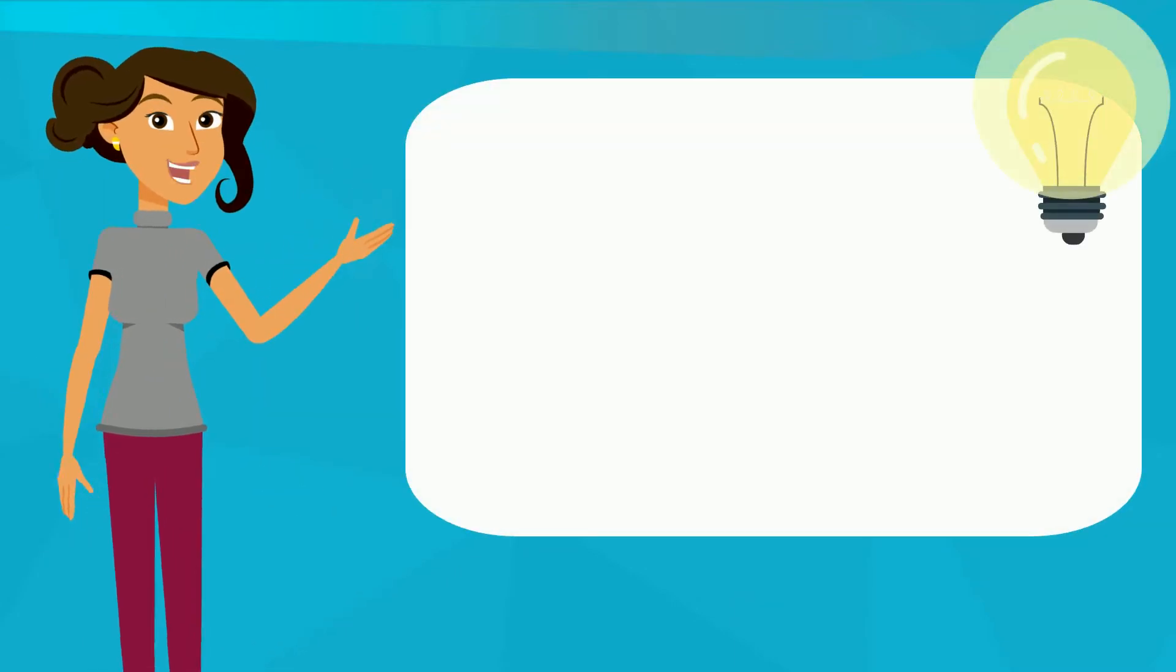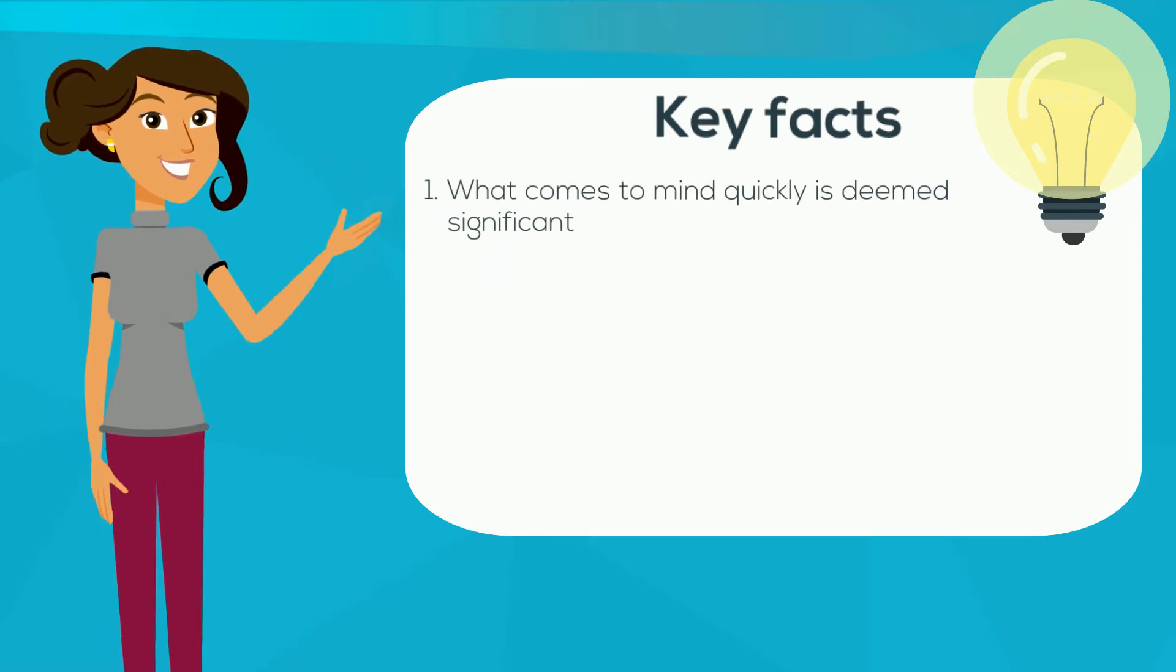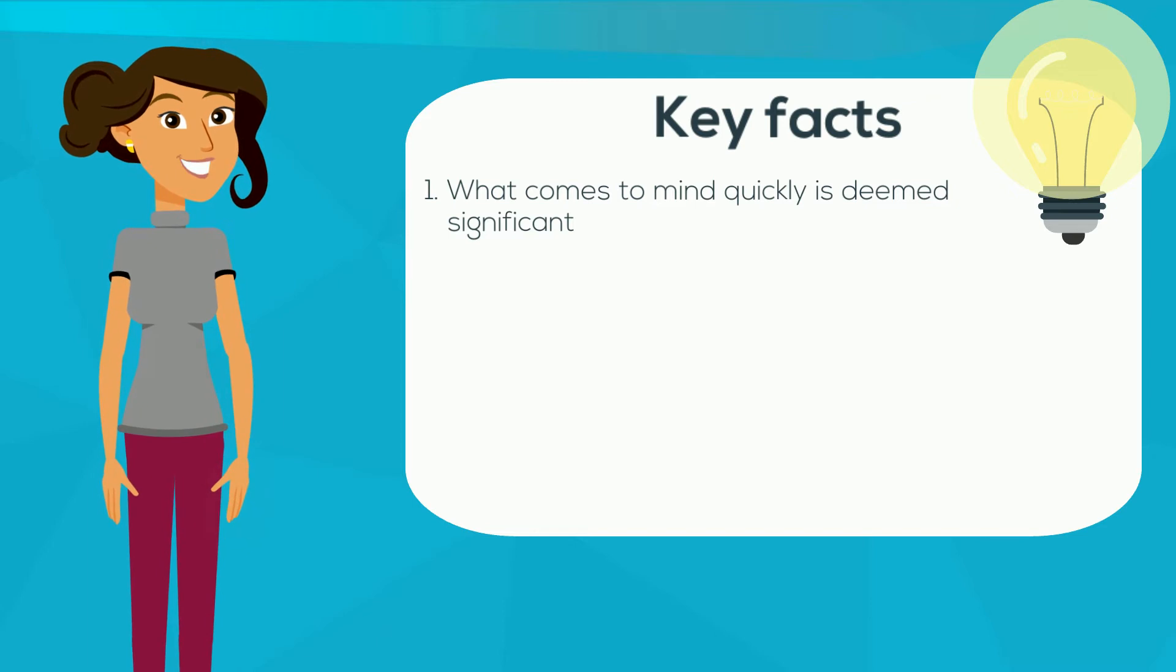So here are some key facts. How does availability heuristic work? First, what comes to mind quickly is deemed significant, although incorrectly.